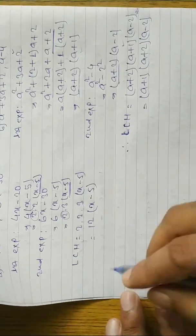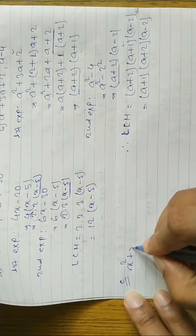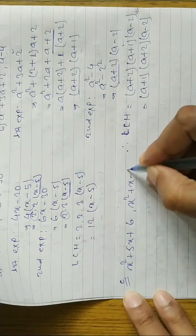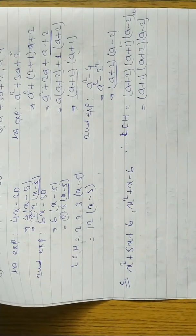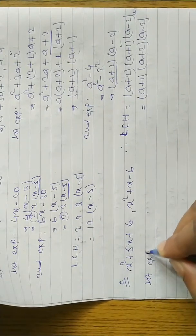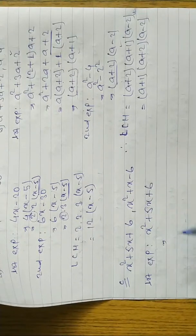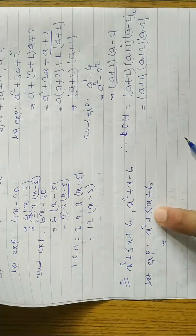Now look at question 2c: x² + 5x + 6 and x² + x - 6. In this question you are not only learning LCM but also learning factorization — how to factorize equations. For the first expression, x² + 5x + 6, we need factors whose multiplication is 6 and addition is 5.